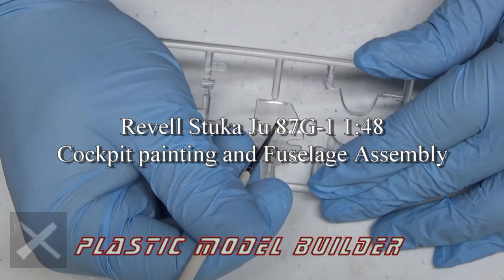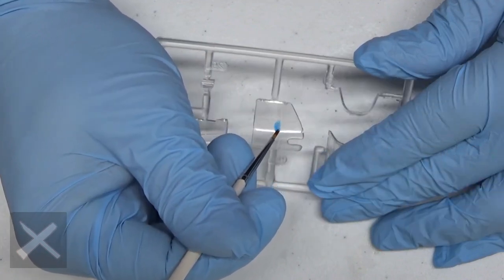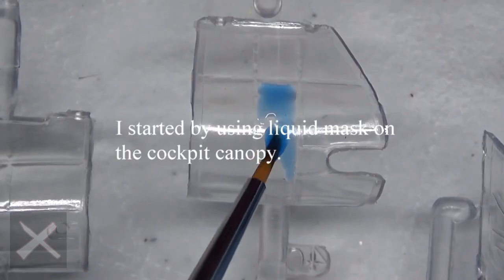Plastic Model Builders, it's me, your host Ari. Welcome back. This is the Stuka, the Revell kit, the JU87G1.